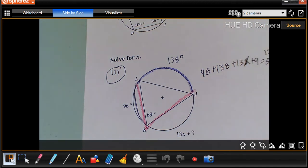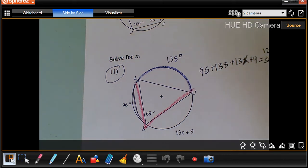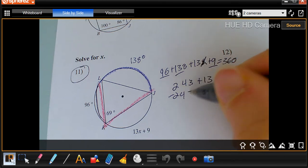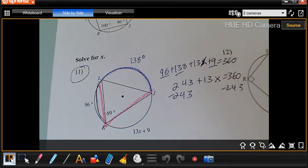So I'm just going to add all these parts together. I'm going to say 138 plus 96 plus 9 gives me 243 plus 13X equals 360. Then I'm just going to subtract 243 from each side.